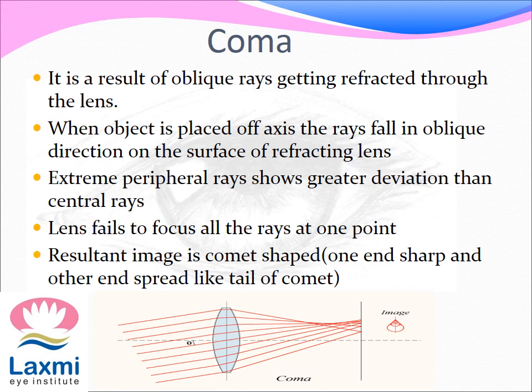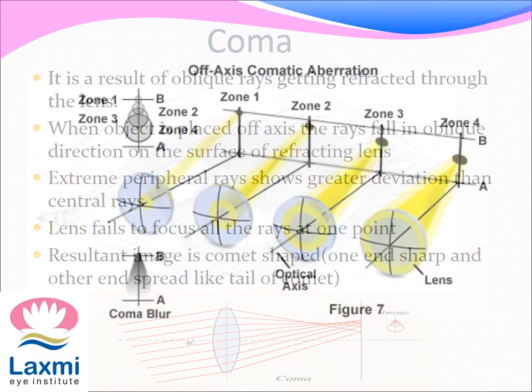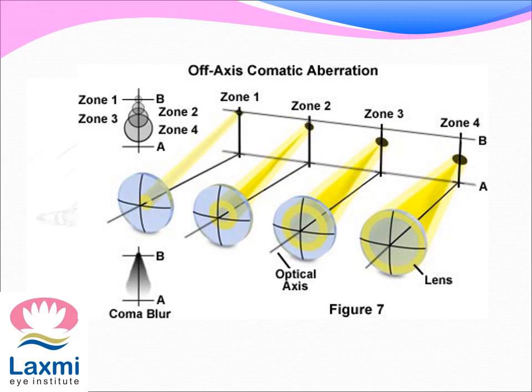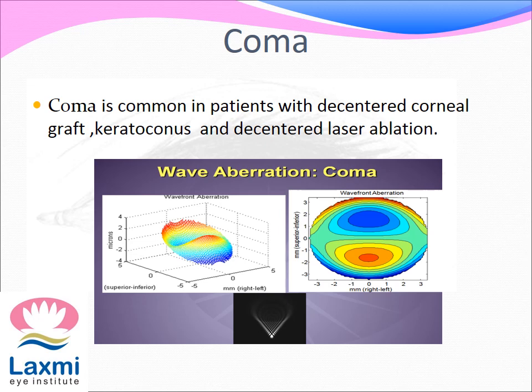The second higher order aberration is coma. It is the result of oblique rays getting refracted through the lens. When the object is placed off axis, the rays fall in an oblique direction on the surface of the refracting lens, creating a comet-shaped image as the rays do not focus on one point. The peripheral rays show greater deviation than the central rays. In this diagram, oblique rays near the optical axis show lesser coma blur and thus lesser aberration, as seen in zone 1, while the peripheral rays away from the optical axis show more blur, as seen in zone 4. Coma is common in patients with decentred corneal graft, keratoconus, and decentred laser ablation.